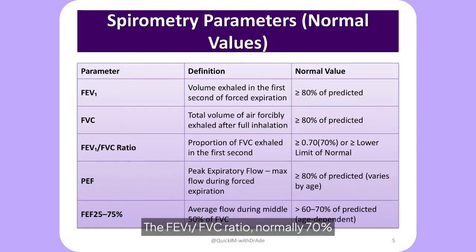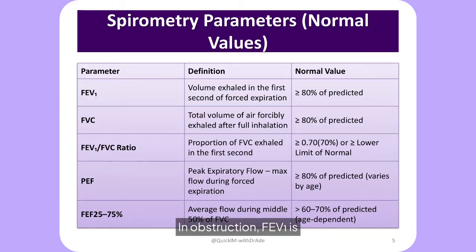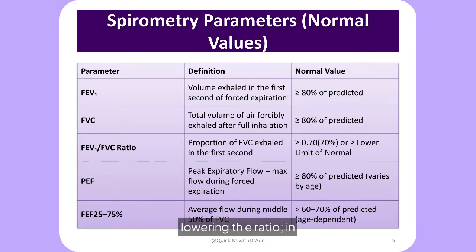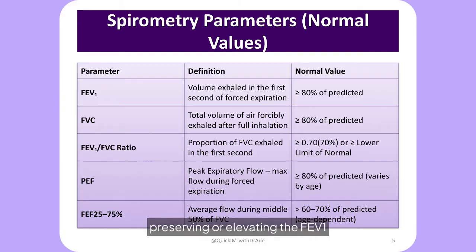The FEV1/FVC ratio, normally 70% and above, helps distinguish between obstructive and restrictive patterns. In obstruction, FEV1 is disproportionately reduced, lowering the ratio. In restriction, both values fall proportionally, but FVC is often reduced to a greater extent, preserving or elevating the FEV1/FVC ratio.